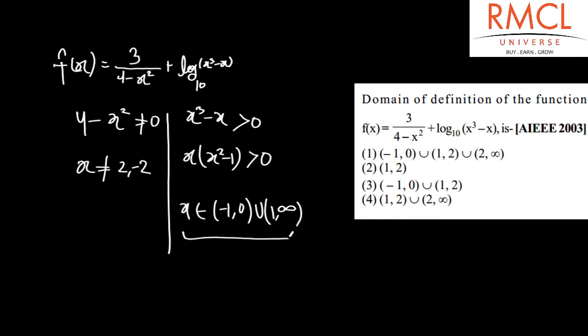If this is the domain for x and also it is given that x is not equal to 2 and minus 2, so therefore, the domain is minus 1 to 0, union 1 to 2, union 2 to infinity. So if this is the domain, then option 1 is correct.